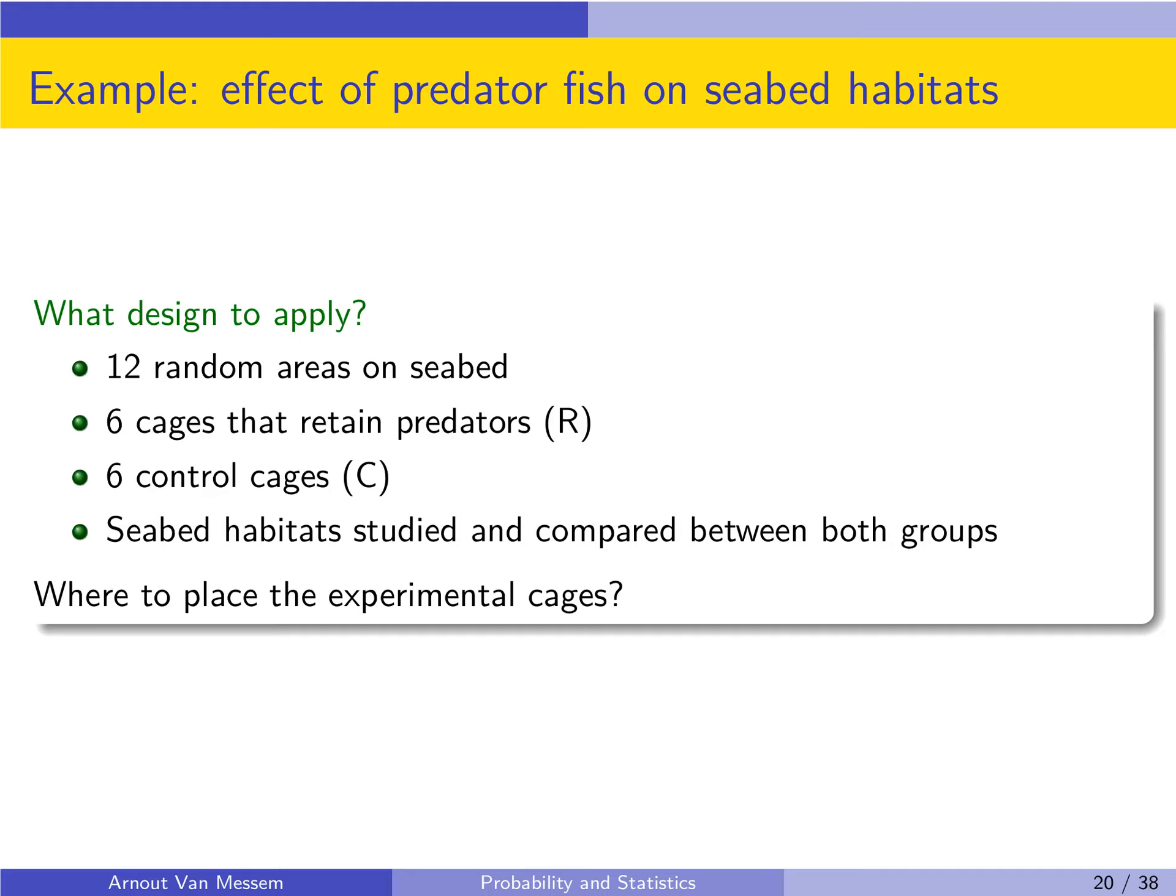Let us look at the following example. In the North Sea in front of the Belgian coast the effect of predator fish on the seabed habitat was tested. The goal of the experiment was to see if we take out the predator fish will life of the seabed be changed. In order to test this hypothesis, 12 areas on the seabed were randomly chosen and in those areas cages were put. Six cages that retain predators, so they are the test group because here the predator is taken out of the habitat, and six control cages.